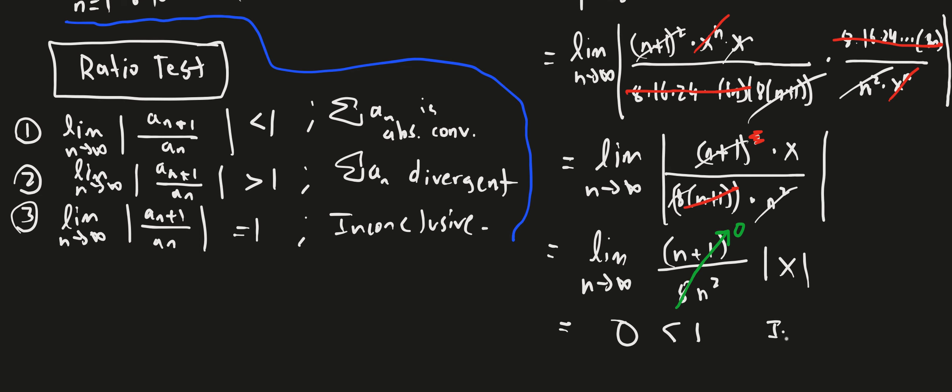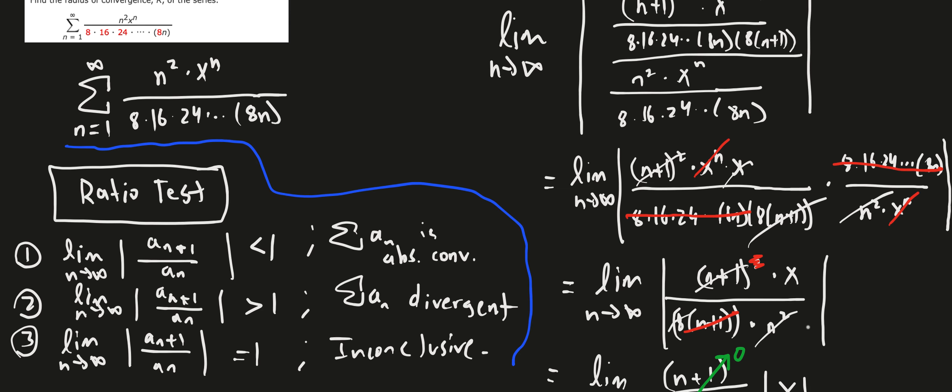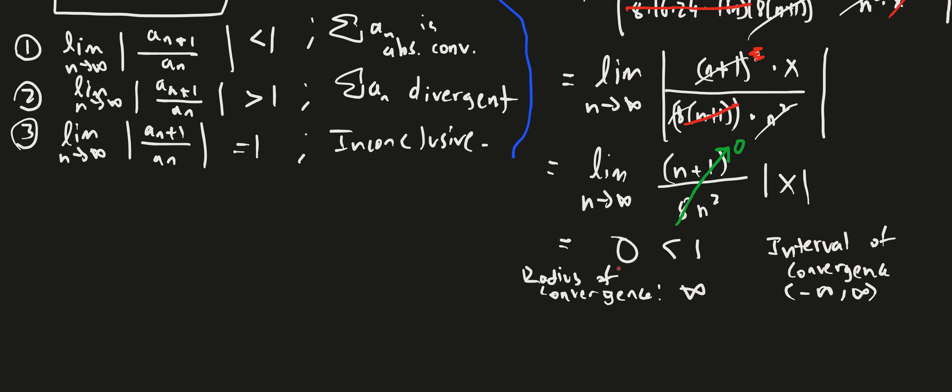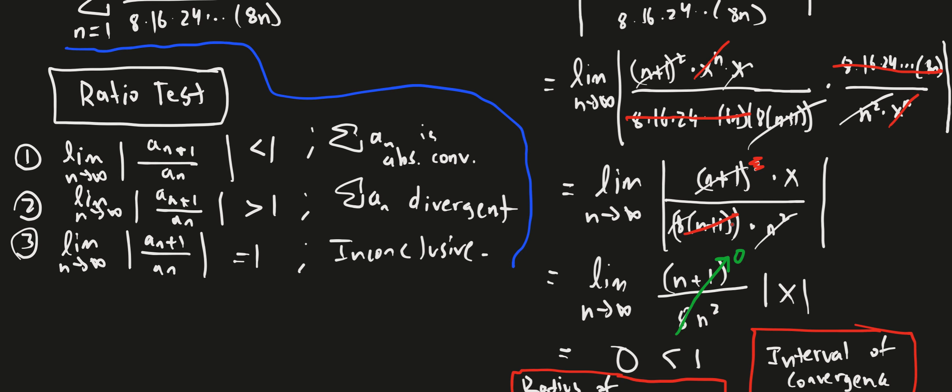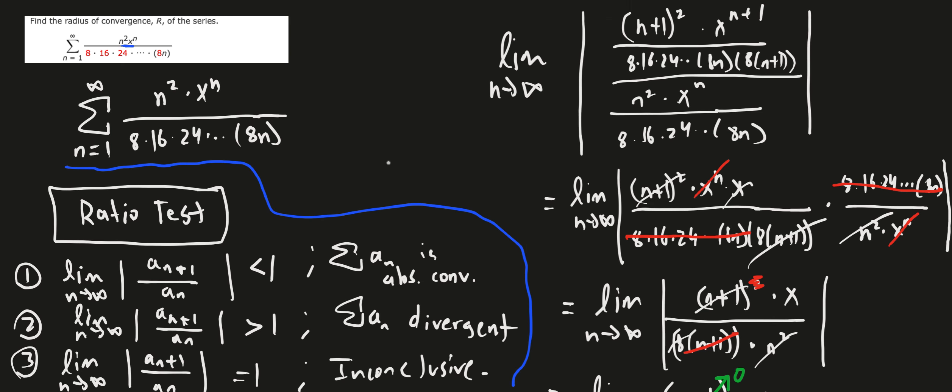So your interval of convergence is from negative infinity to infinity, which indicates that, of course, your radius of convergence is infinity. That's an infinite radius. And we could determine our center by looking at the fact that this is just an x here, and if it was like x minus 2 raised to the n, then your center would be 2. So this is just x raised to the n, or x minus 0 raised to the n, so 0 is your center. So your radius of convergence is infinite. That's it.